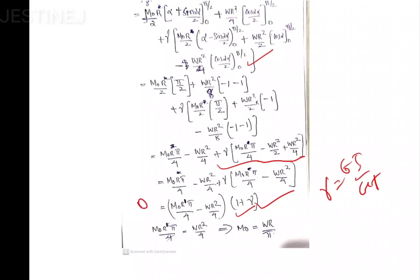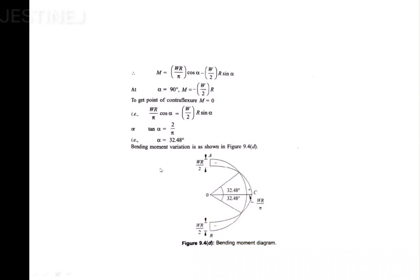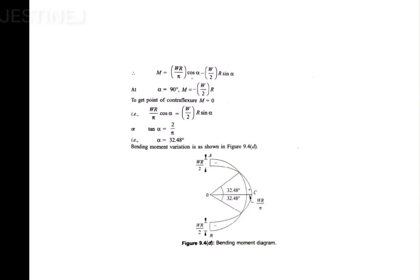After integration, you reach the stage: M0·r·(π/4) − W·r²/4·(1 + gamma) = 0. Solving for M0 gives M0 = Wr/π. Substituting M0 back into the bending moment equation: M = (Wr/π)·cos(alpha) − (W/2)·r·sin(alpha). At alpha = 90°, M = −Wr/2, and by symmetry, both sides give −Wr/2.